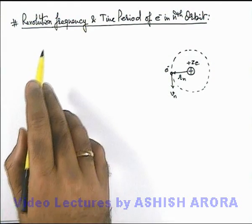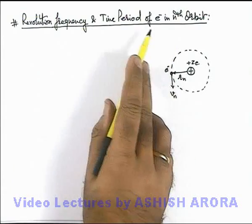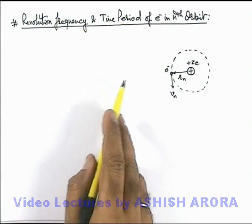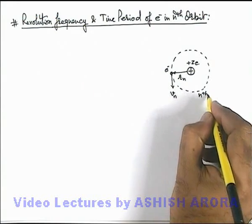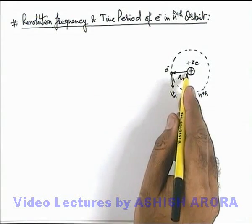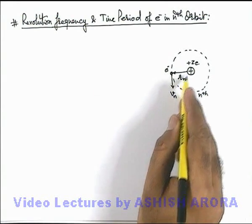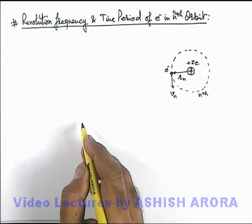Now let us study the revolution frequency and time period of an electron in the n-th orbit in the Bohr model. Say if the electron is revolving with a velocity v_n in an orbit of radius r_n around the nuclear charge plus z e.